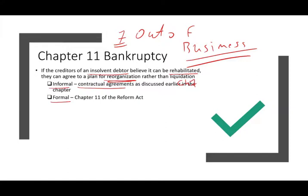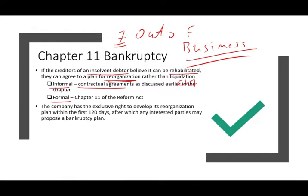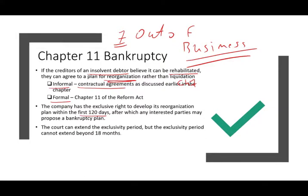Bear in mind, although it goes through Chapter 11, the company has an exclusive right to develop its reorganization plan within 120 days, after which any interested parties may propose a bankruptcy plan. The court can extend this reorganization period up to 18 months, basically giving the company a chance to put their act together and hopefully reorganize the business.